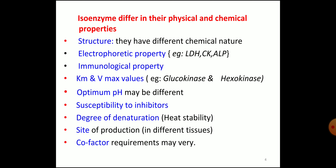Isoenzymes differ in their physical and chemical properties — that is, kinetic properties. They have different chemical structure. Electrophoretic property: mobility in the electrophoretic field may be different for different isoenzymes. Examples are lactate dehydrogenase, creatine kinase, and alkaline phosphatase. Immunological properties may also differ. KM value and VMAX values may also be different.